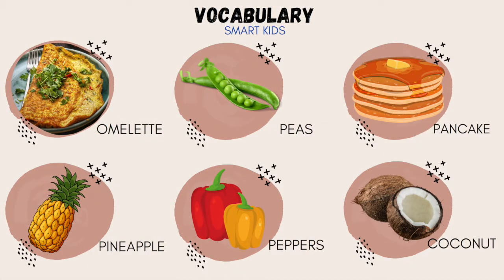Module 6 Smart Kids Vocabulary: omelette, peas, pancake, pineapple, peppers, coconut.